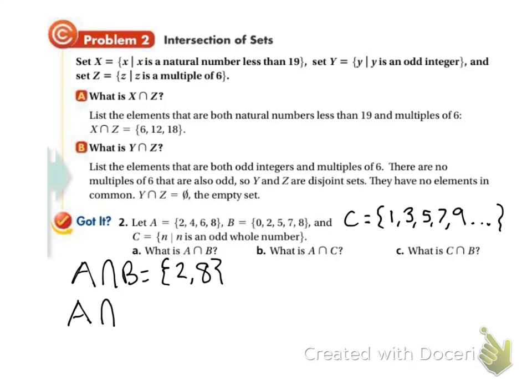The intersection of A and C is nothing. They don't share anything. So that's going to be our empty set, or our null set. I'll just leave it as empty brackets there.